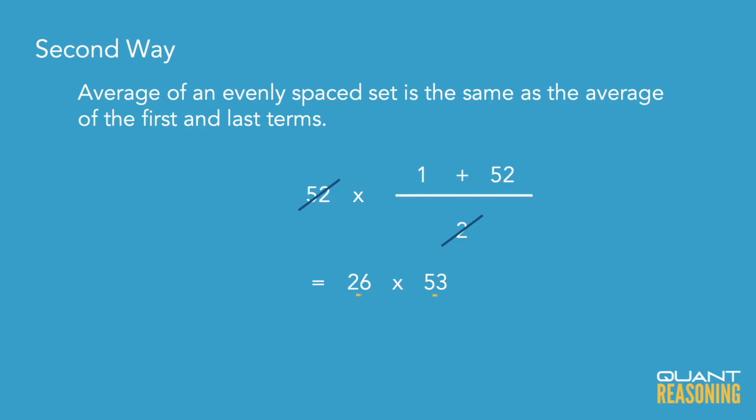We shouldn't have to actually multiply 53 times 26 on the GMAT — it seems a little more computational than we should have to do on this test. If you just think about the units digit, the product would have to end with an 8, because 3 times 6 is 18. There's only one answer choice that ends with an 8, and that's by design — they wanted to give an advantage to people who can think outside the box and find shortcuts. So we're not going to multiply 53 times 26; we're just going to realize the units digit of the product is 8 and pick the only answer choice that has that. The correct answer is C.